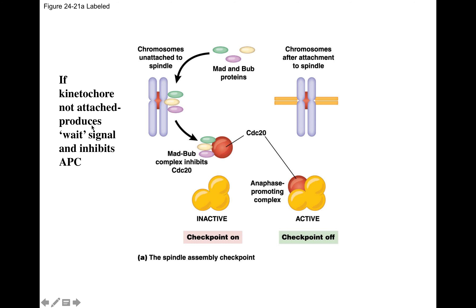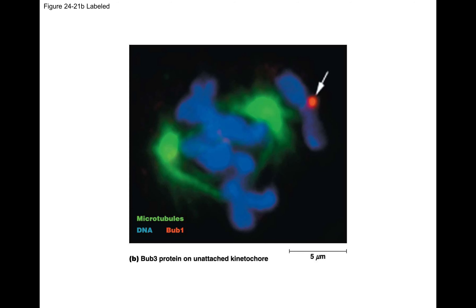Once MAD and BUB are gone, nothing prevents the anaphase-promoting complex from becoming active and activating separase, which breaks the cohesin protein and allows the chromatids to separate. This is a checkpoint to ensure that before you go through anaphase, kinetochore microtubules are attached to each sister chromatid. Immunostaining for BUB — one of these wait signals — shows BUB on an unattached chromosome.